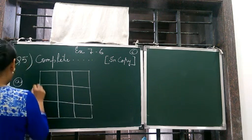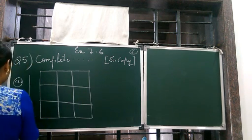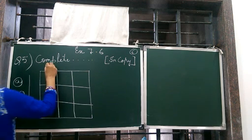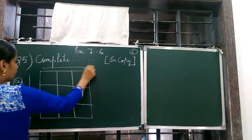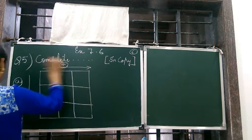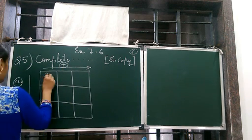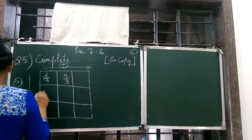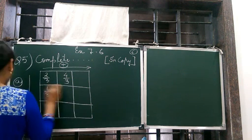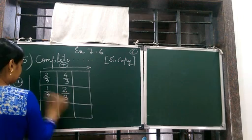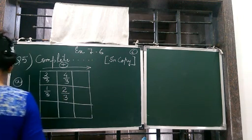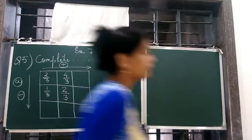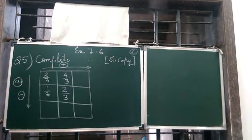This is the box. This side is subtraction — as we go down we have to subtract, and as we go this way we have to add. So this is 2 by 3, 4 by 3, this is 1 by 3, 2 by 3. Now we have to add the fractions.